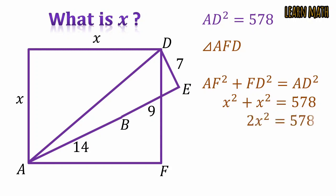2x square is equal to 578. Dividing both sides by 2 and we will get x square is equal to 289.